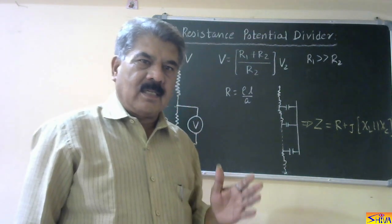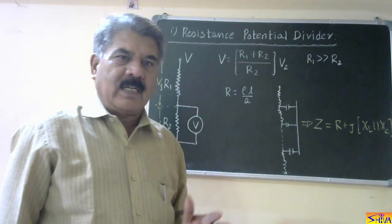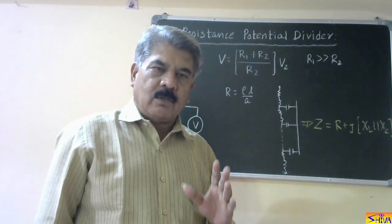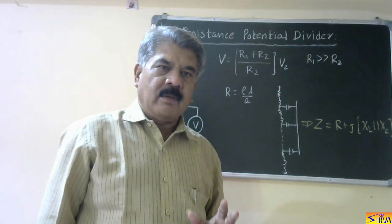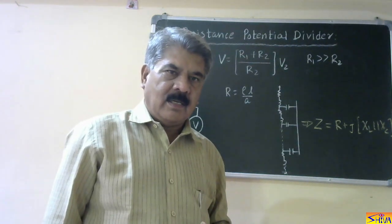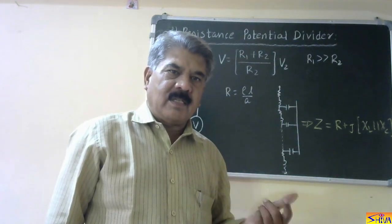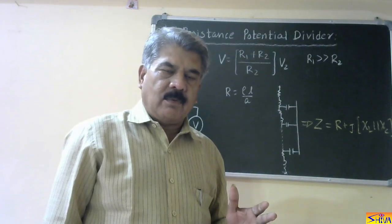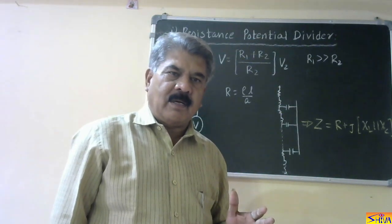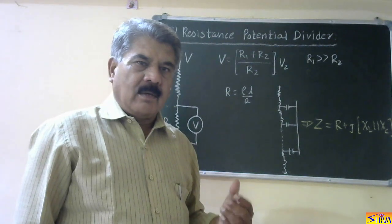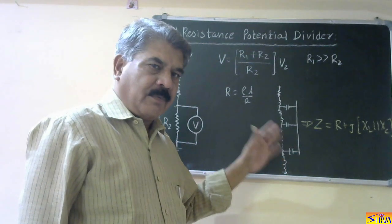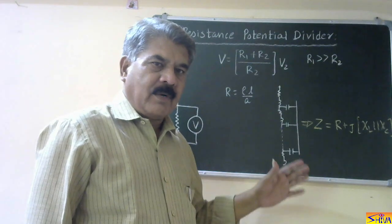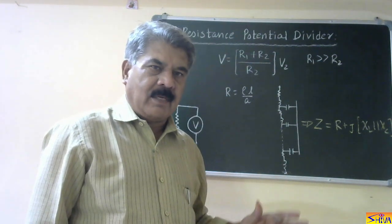Therefore, this resistance potential divider method is not preferred for high AC voltage measurement — it is not that it cannot be used, but it is not preferred. If the frequency is higher, the error will be more. So it is preferred for high DC voltage measurement and not preferred for high AC voltage measurement.